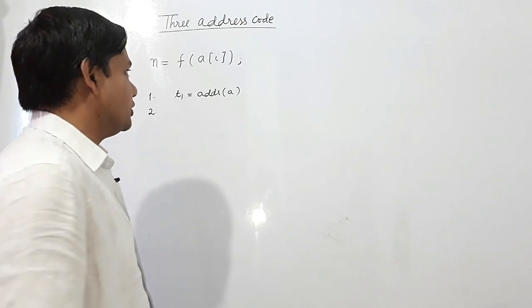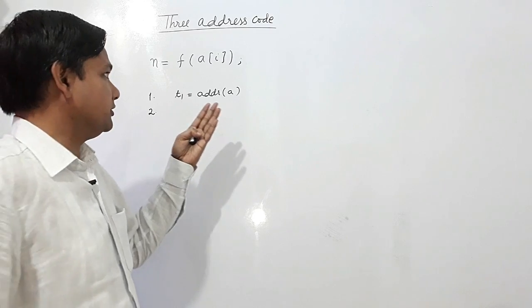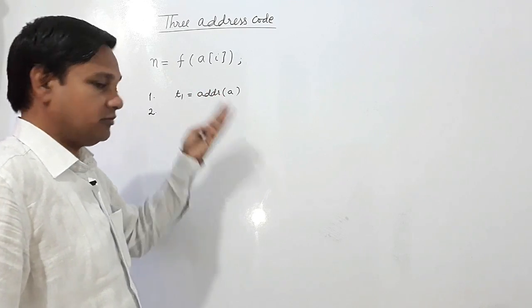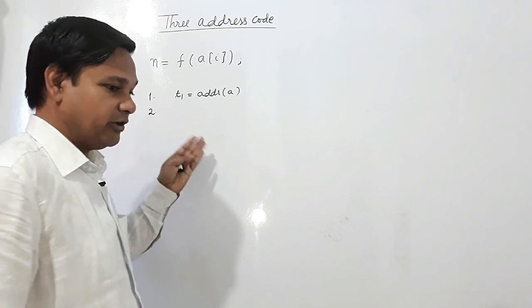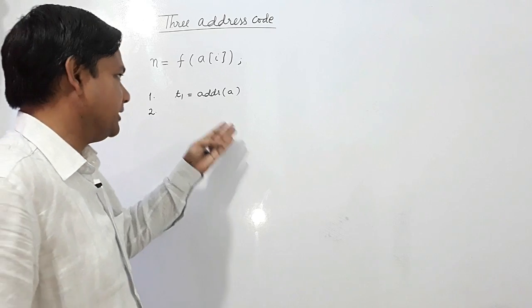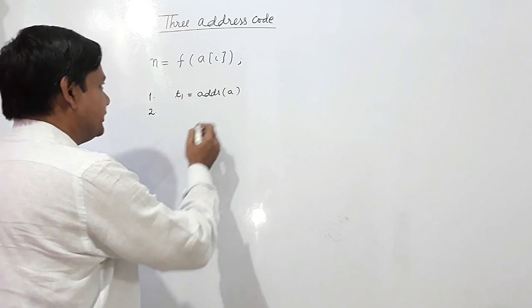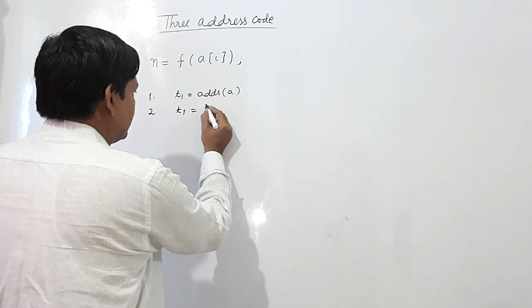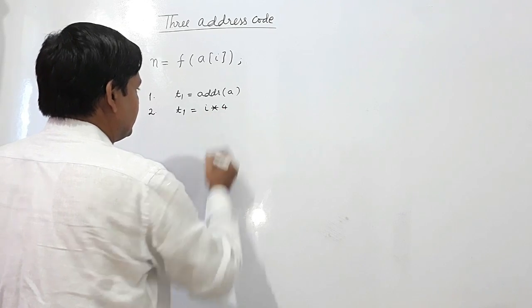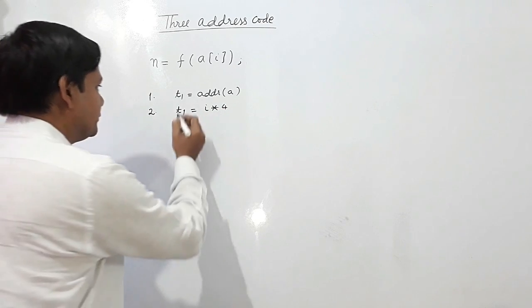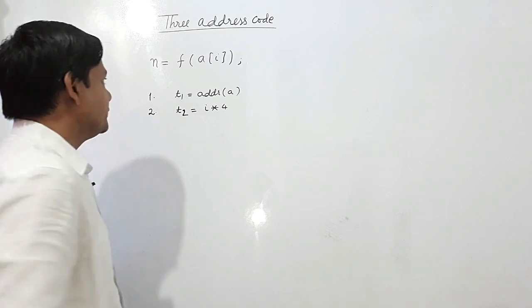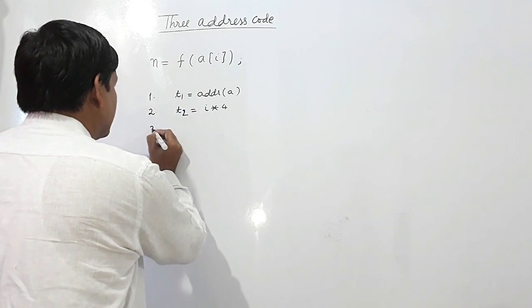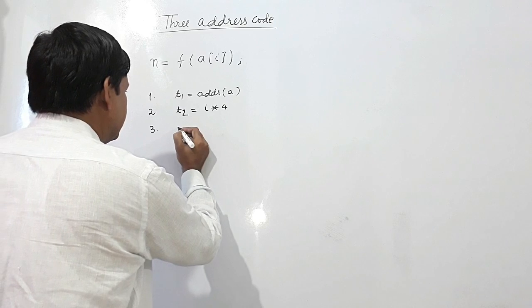Nothing is given here, it may be taken as character or whatever, but I am assuming it's of type integer, so I will multiply i by 4. So it will be t2. Now a[i] can be written as t1 plus this offset.